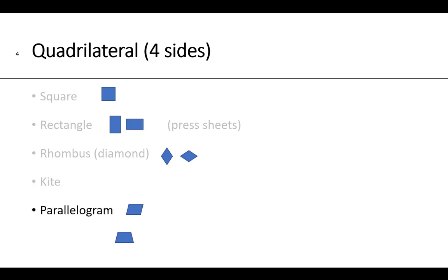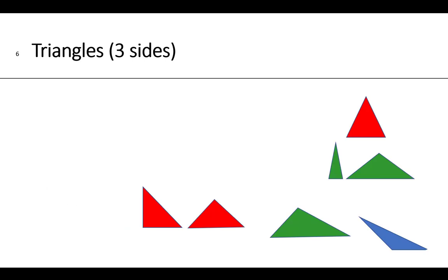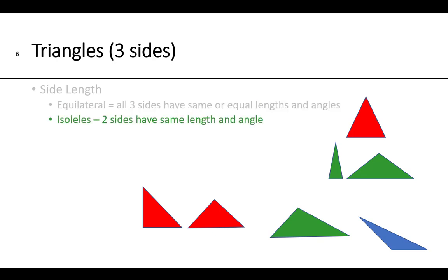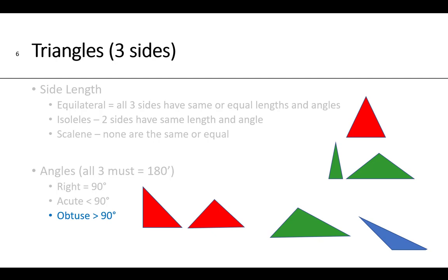Looking at triangles which are three-sided, we can classify and categorize triangles either by their side length or by their angles. For side length we can have equilaterals which mean all three sides have the same or equal lengths and angles. We can have an isosceles triangle where two sides have the same angle, or we can have a scalene triangle where none of the sides or angles are the same. When we look at angles, all interior angles must equal 180 degrees. So we have a right triangle which has one 90 degree angle, we have acute angles which are less than 90 degrees, and we have obtuse angles which are greater than 90 degrees.